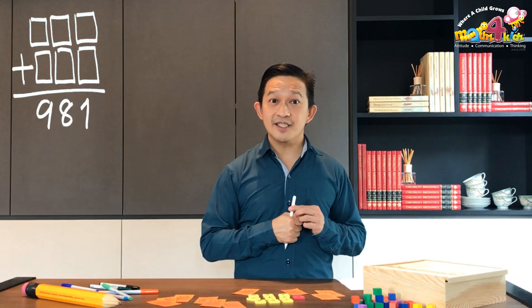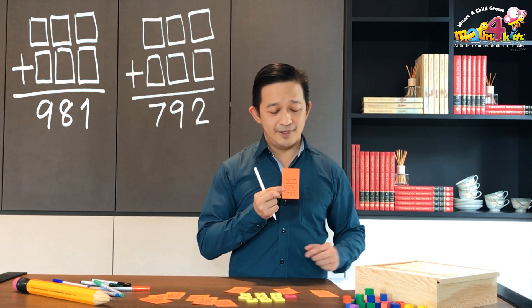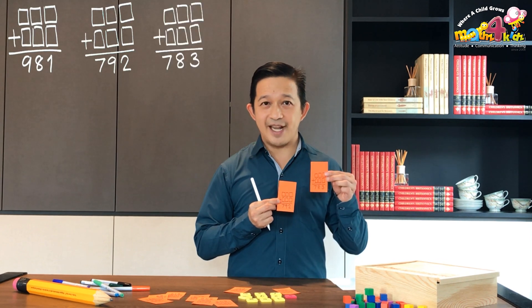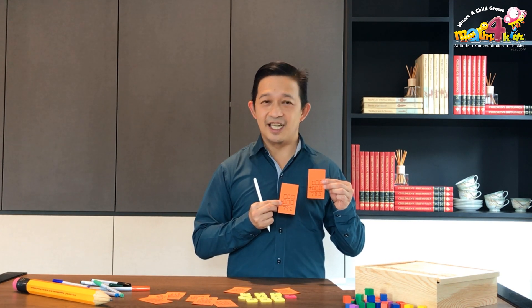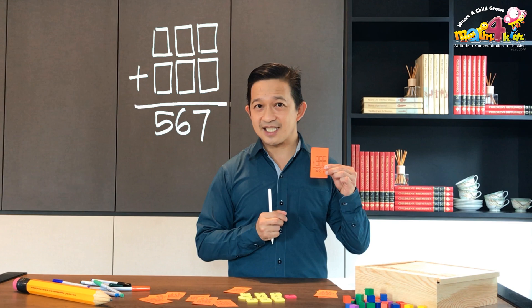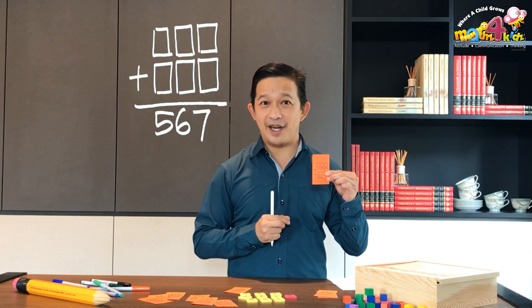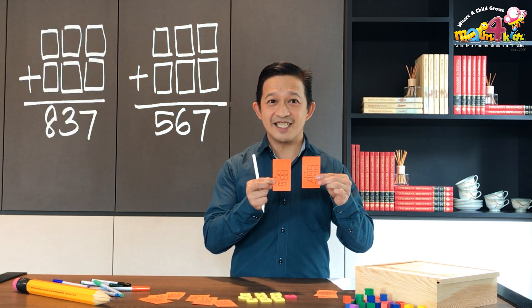Another way we can challenge ourselves is to try to find all the possible sums. We got 981, we also got 792, we also got 783, and we got a lot of others. Another way to challenge ourselves is to try to find out if there's anything interesting about the sums in the equations that we managed to get. Is there anything interesting between the two sums that we see here?